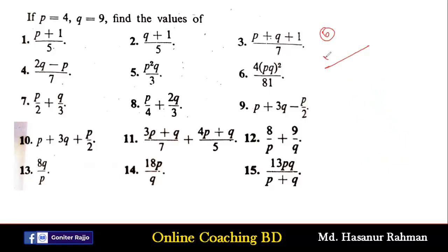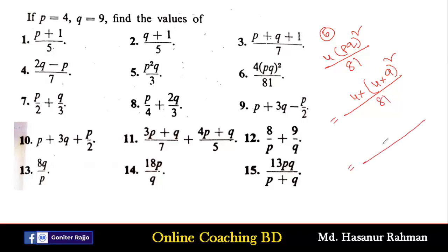Number 6 says 4p²q²/81. So 4 multiplied by 4 multiplied by 9, squared, divided by 81 — we write 4×4×9×9 divided by 81. Dividing 81 by 9 gives 9, then dividing 9 by 9 gives 1. So we have 4×4×4, which is 4×4=16, and 16×4=64. That is the solution of number 6.